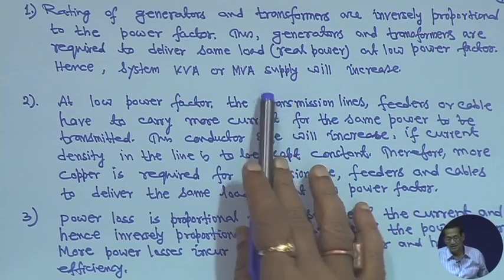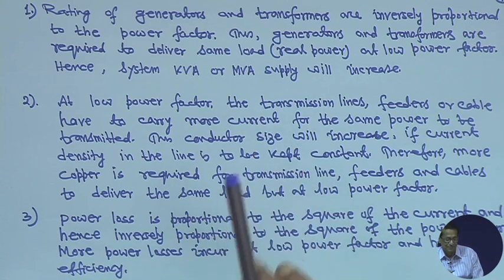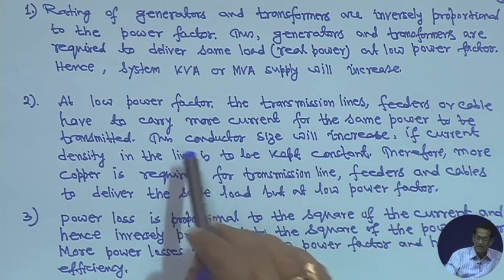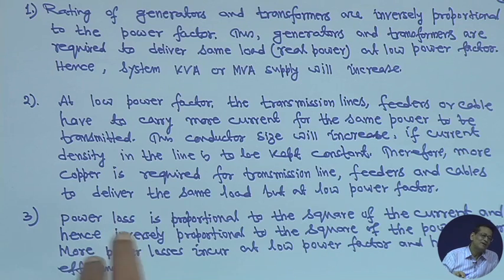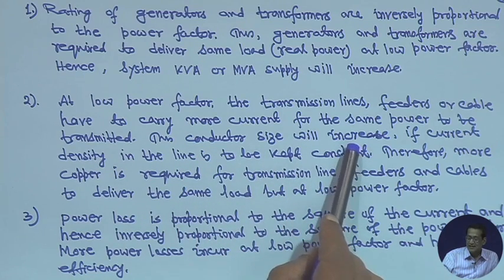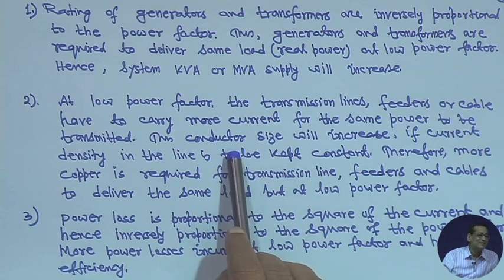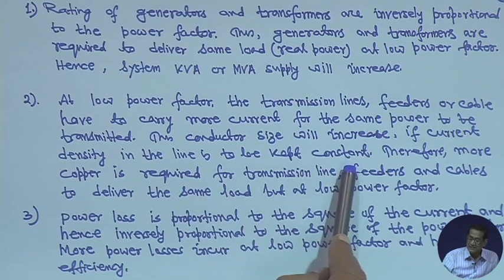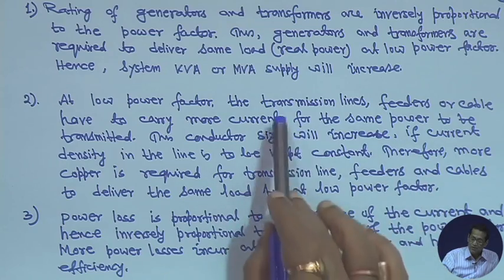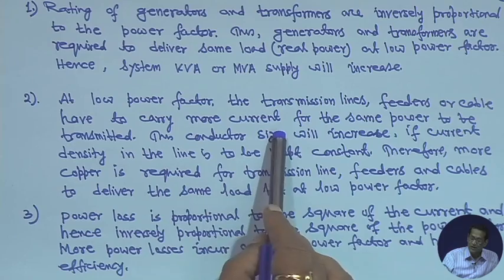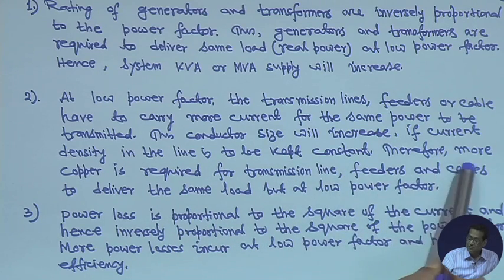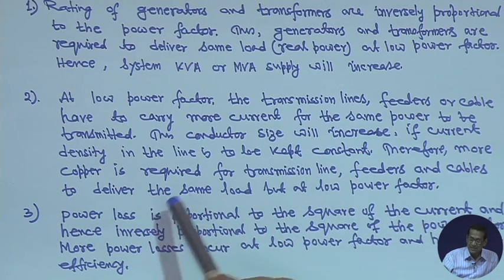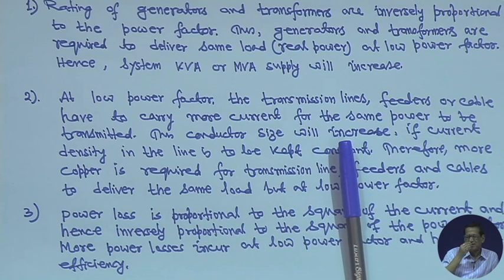At low power factor, transmission lines, feeders, or cables have to carry more current for the same power to be transmitted, because more reactive power has to flow through the line. Thus, conductor size will increase because current will increase; therefore the ampacity of the conductor will increase if current density in the line is to be kept constant.